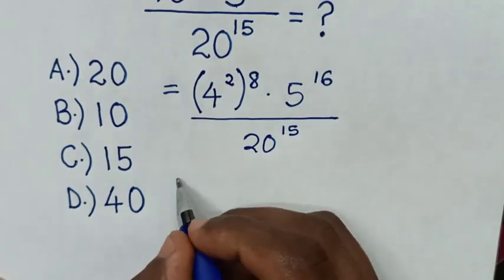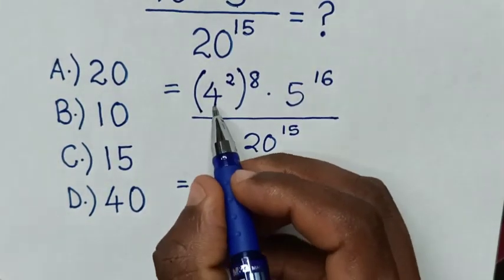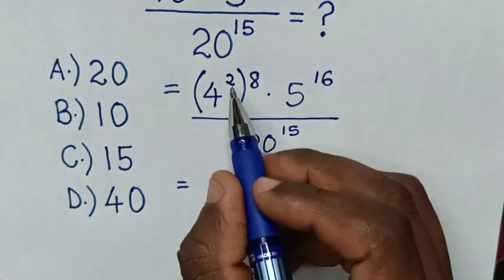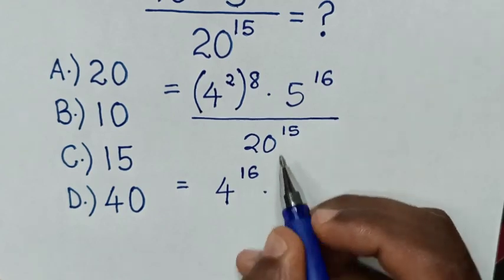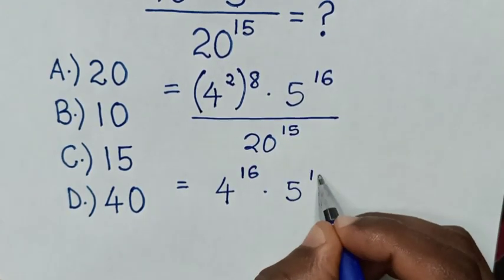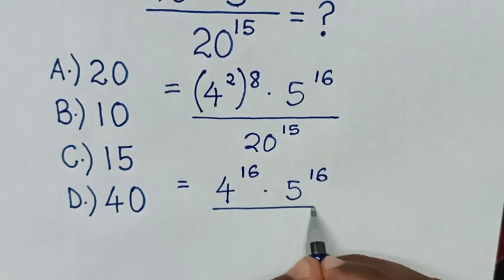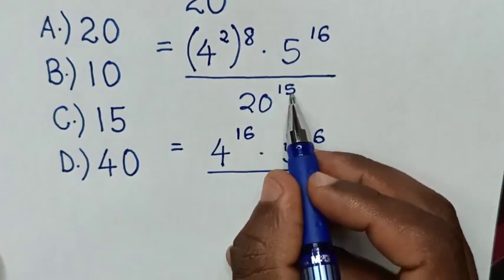Then in next step, it will be equal to 4 power of 2 times 8 is power of 16, then times 5 power of 16 over 20 power of 15.